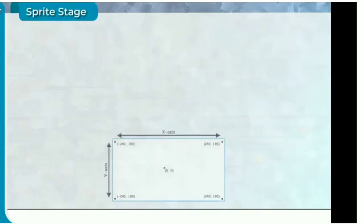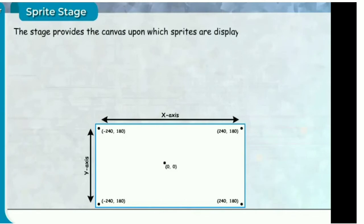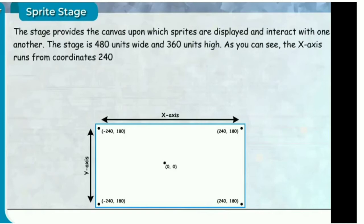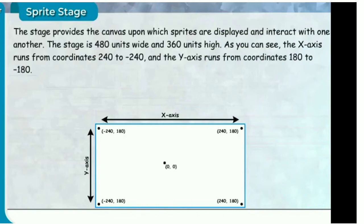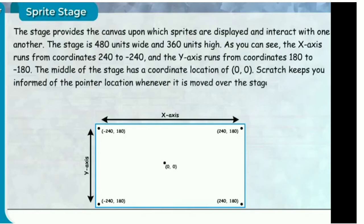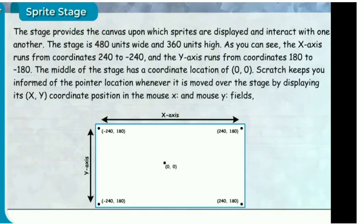Sprite stage. The stage provides the canvas upon which sprites are displayed and interact with one another. The stage is 480 units wide and 360 units high. The x-axis runs from coordinates 240 to minus 240, and the y-axis runs from coordinates 180 to minus 180. The middle of the stage has a coordinate location of 0, 0. Scratch keeps you informed of the pointer location whenever it is moved over the stage, by displaying its x-y coordinate position in the mouse x and mouse y fields just beneath the bottom right side of the stage.